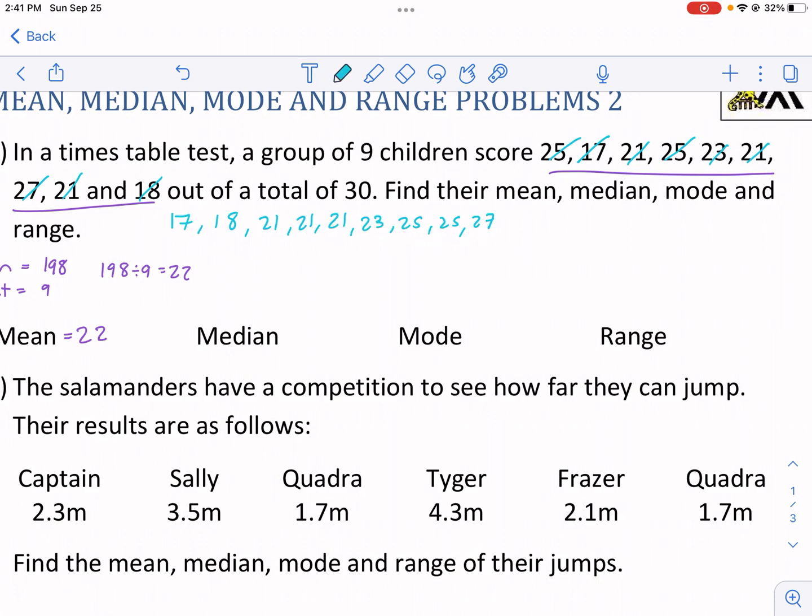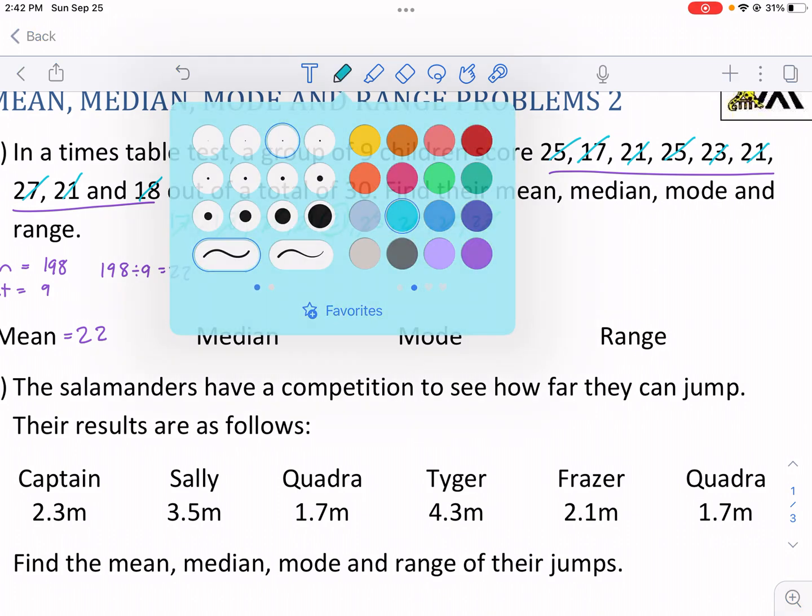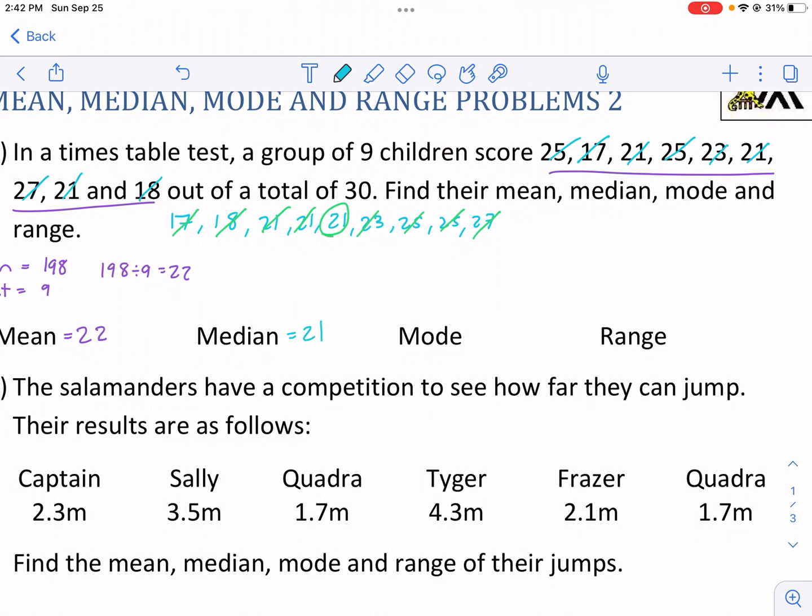Our two-step process is one, put them in order, done. Two, we're going to find the middle. I take one finger on the lowest number, one finger on the biggest number, and work my way in until I arrive at the middle. I arrive at my middle number, which is 21. So 21 is my median score.